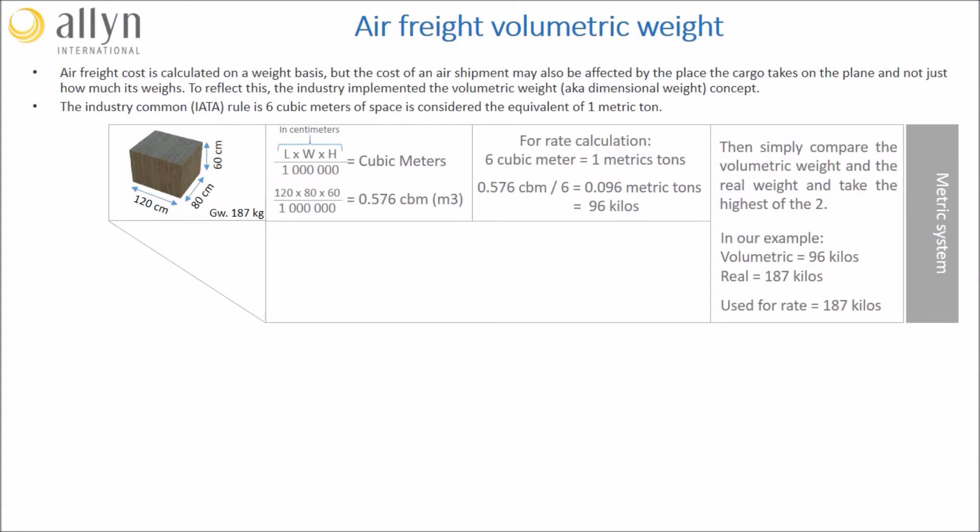In our example, the volumetric weight we just calculated is 96 kilos, whereas the real one is 187 kilos. Therefore, to calculate the freight rate, we will use the real one, 187 kilos.